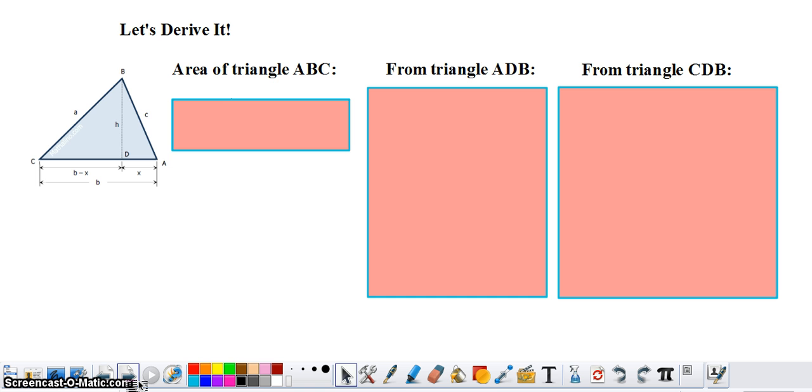In order to derive our formula for Heron's formula for the triangle, first we need to focus on the area of triangle ABC, the large triangle. Go ahead and write the formula for the basic area of a triangle. If you wrote that area equals one-half base times height, you are correct.